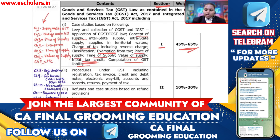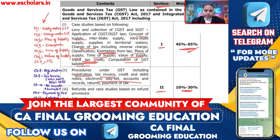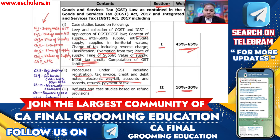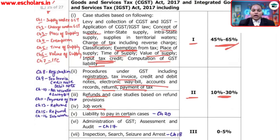Section number 2 carries 10% to 30% weightage. It includes: Registration (Chapter 8), Tax Invoice (Chapter 9), Credit and Debit Note, Accounts and Records, E-way Bill (Chapter 10), Payment of Tax (Chapter 11), Returns (Chapter 13), Refunds (Chapter 15 & 16), and Job Work. Liability to pay in certain cases is also included in this second section.